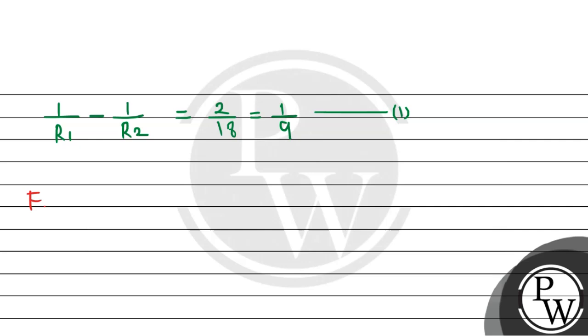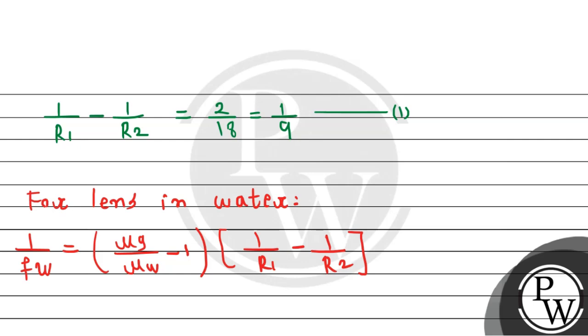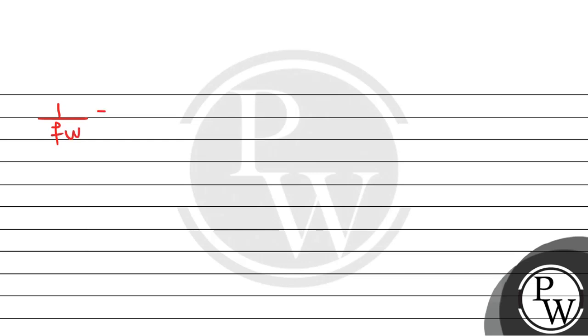For the lens in water, 1/f_w equals mu_g divided by mu_w minus 1, times (1/R1 - 1/R2). So 1/f_w = (1.5 divided by 4/3, minus 1) times 1/R1 minus 1/R2. This will be 1/f_w = 1/8 times 1/9, from the equation. So f_w = 72 cm. The focal length in water is 72 cm.